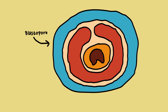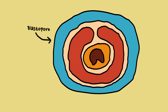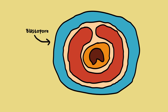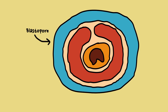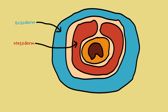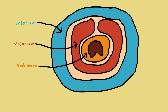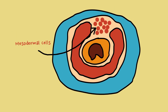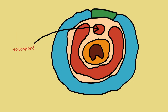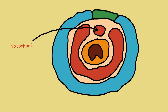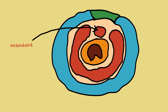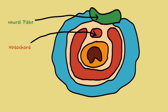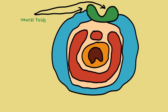It starts with the dorsal lip of the blastopore. At this point, the fertilized egg develops into an embryo with three germ layers: the ectoderm, mesoderm, and endoderm. Mesodermal cells form a rod of mesoderm called the notochord, which provides support for the embryo. The ectoderm thickens over the notochord to form the neural plate, which has neural folds.